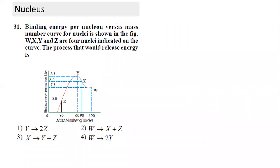Let's look at each process. Y can split into two Z nuclei each of 30. If in this case the binding energy decreases, energy will not get released. The condition for energy to get released is an increase in binding energy — similar to what happens with hydrogen atoms. So in this particular case there's a decrease and energy will not be released.